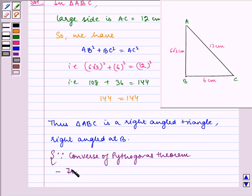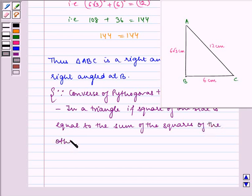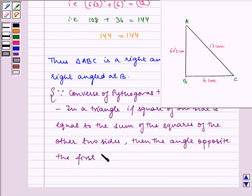which states that in a triangle, if square of one side is equal to the sum of the squares of the other two sides, then the angle opposite the first side is a right angle.